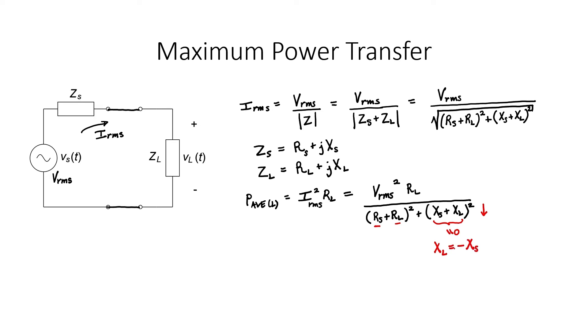Negative reactances are possible, negative resistances are not. We can make a reactance negative by just changing its character, for example, from inductive to capacitive or from capacitive to inductive. So if we have a source that's inductive and we want maximum power transfer, then we should choose a load that's capacitive and vice versa.